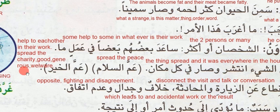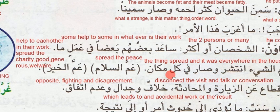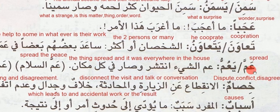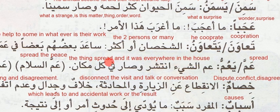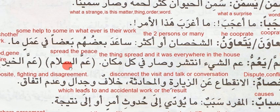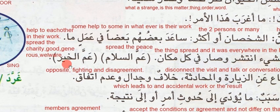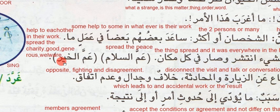Spread the charity. Good — or rose. Amma means spread. Yaam — he spreads. Amma al-shayi antashar wa sari fi kulli makaan — the thing spread and it was everywhere. Spread the peace — amma al-salam. Amma al-khair means the good, generous, or welfare — or help to each other in their work. To spread the charity — this is amma al-khair.